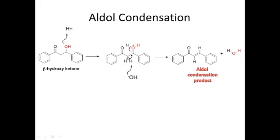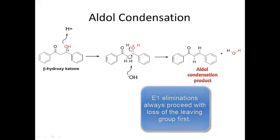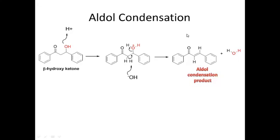This mechanism is a little misleading because if it's E1, the water actually leaves first — but we'll talk more about that in class. What I want you to understand is that in order to do the condensation, lose water, and form the double bond, you have to do an elimination. The elimination happens when you convert the hydroxyl group to a good leaving group by protonating it.